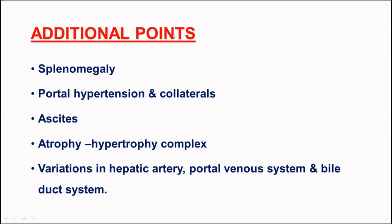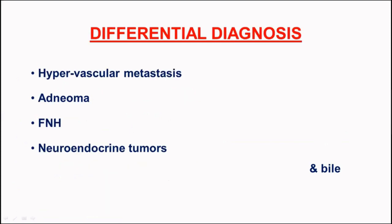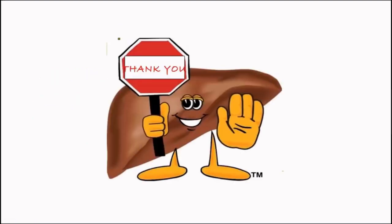Apart from diagnosing HCC, we should report additional points for the treating physician: splenomegaly, portal hypertension, collaterals within the abdomen, degree of ascites, atrophy-hypertrophy complex within the liver, and variations in the hepatic artery, portal venous system, and bile duct system. In the differential diagnosis, we can include hypervascular metastasis, adenoma, FNH, and neuroendocrine tumors, although they typically do not show the characteristic washout seen in HCC, and epidemiological and etiological factors especially for adenoma and FNH can help differentiate.